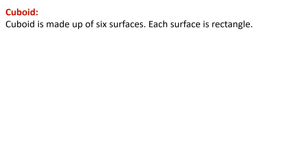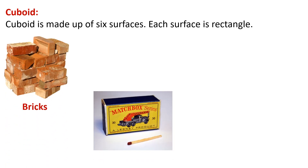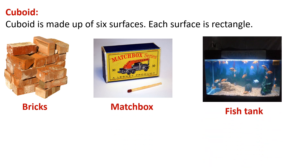Let's learn more about cuboid. A cuboid is made up of six surfaces, and each surface is a rectangle. Examples of cuboid are bricks, matchbox, and fish tank. If you look at a brick, it has six surfaces: front, behind, below, back, and the two sides — six surfaces where each surface is in the shape of a rectangle.